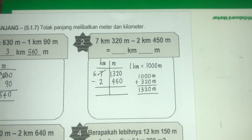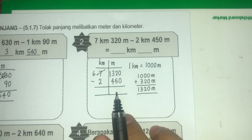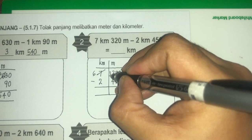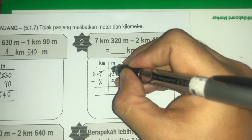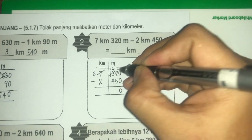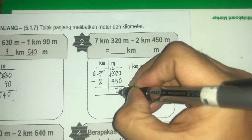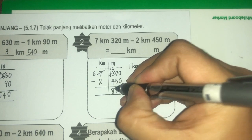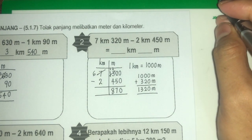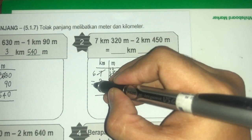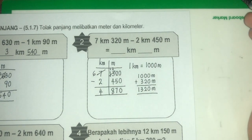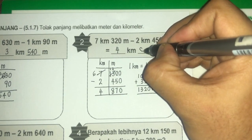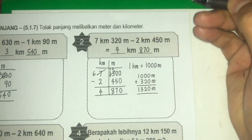Sekarang nombor dah jadi besar, 1,000 lebih. Baru boleh tolak dengan 450. Kosong tolak kosong, kosong. 2 tolak 5 tak boleh, pinjam sini, sini jadi 2, sini jadi 12. 12 tolak 5 ialah 7. 12 tolak 4 ialah 8. 6 tolak 2 ialah 4. Jawapan akhirnya ialah 4 kilometer, 870 meter.